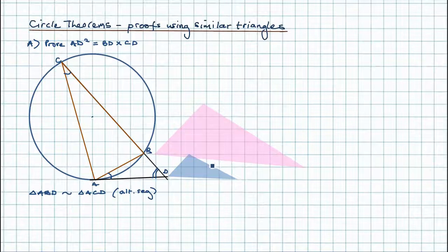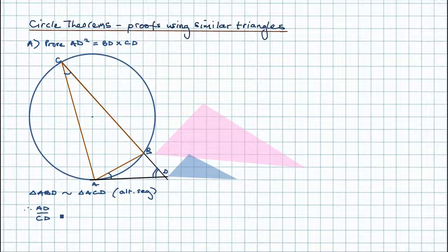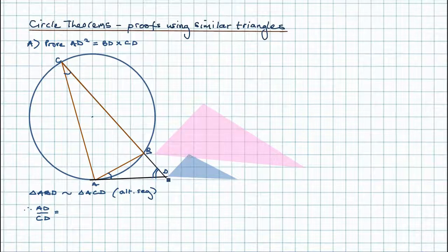Step two: we relate the sides. We can say AD over CD equals BD over AD. AD corresponds to CD, and BD corresponds to the tangent AD. So we can express both ratios as fractions and set them equal to each other.